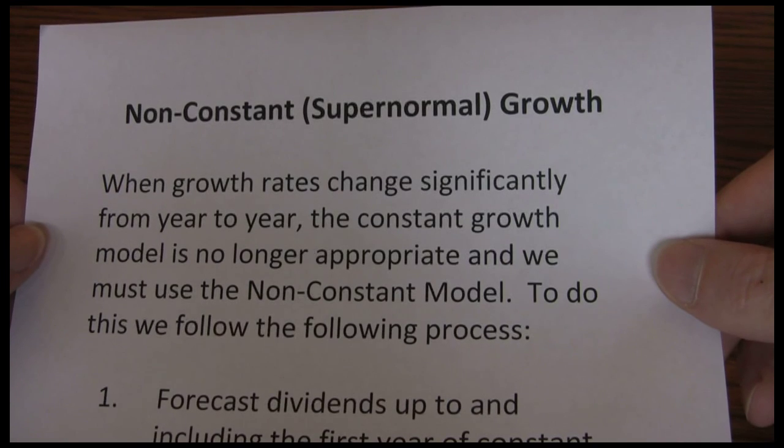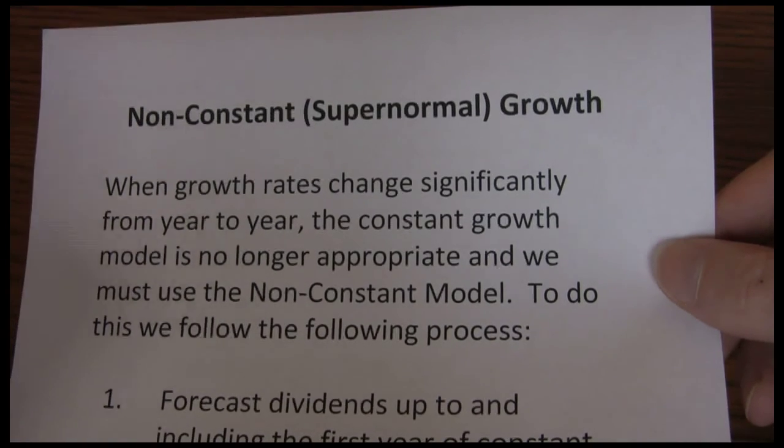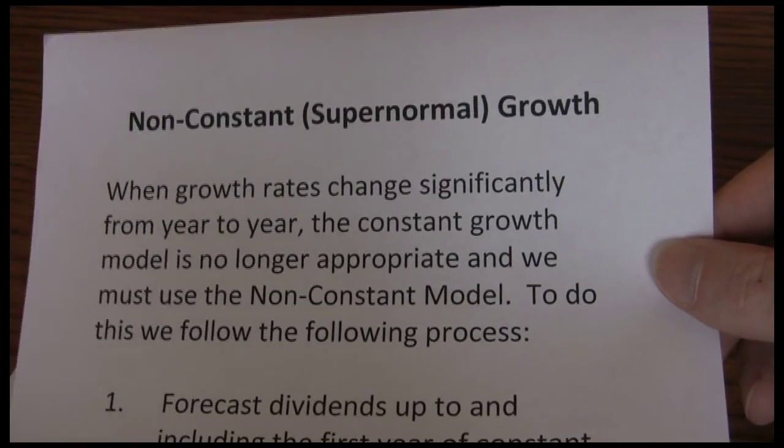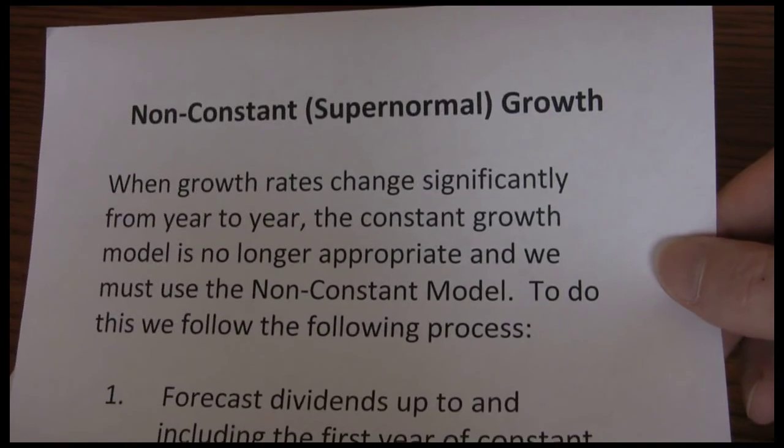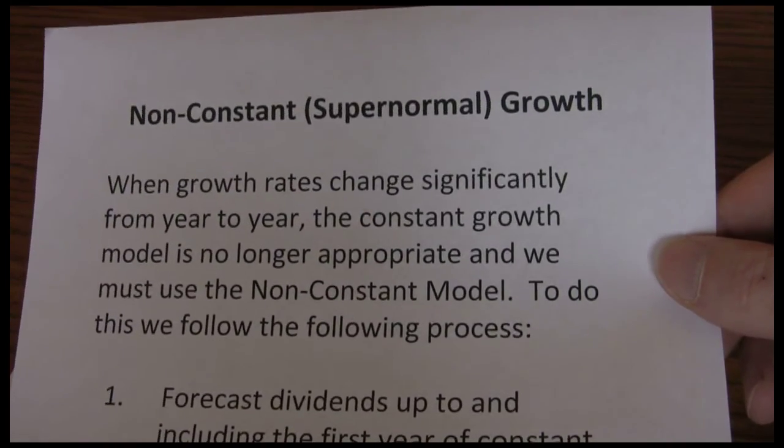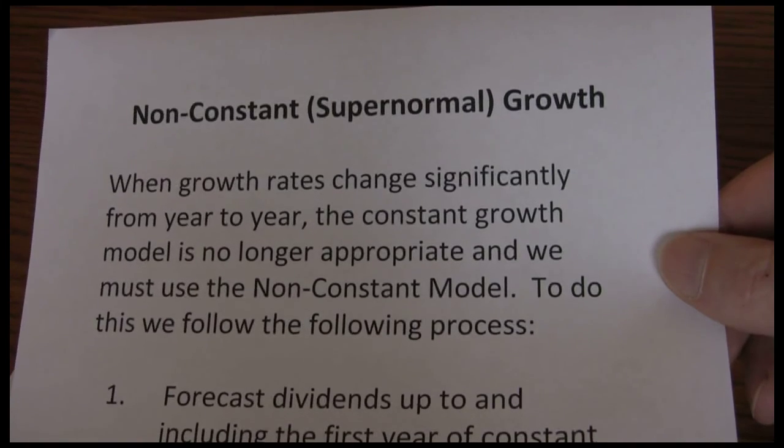In the constant growth model we had to assume dividend growth was going to be constant every year. The company would grow at five percent per year forever or six percent per year forever. Companies don't do that.